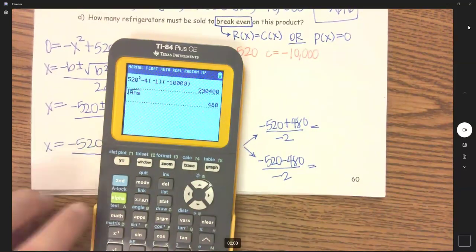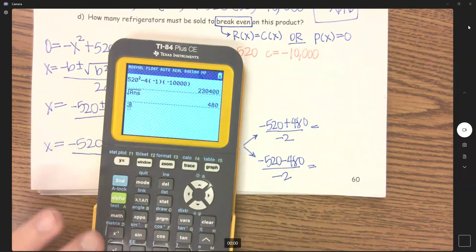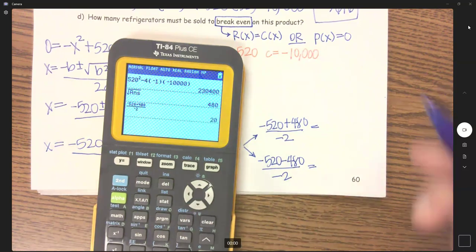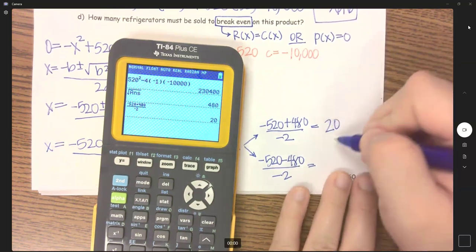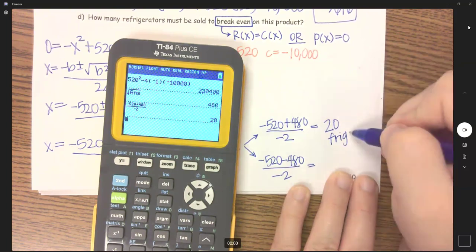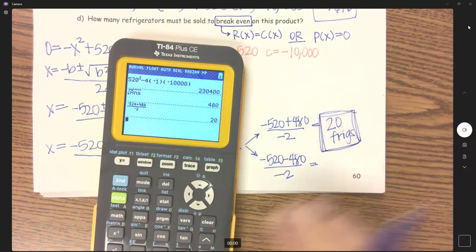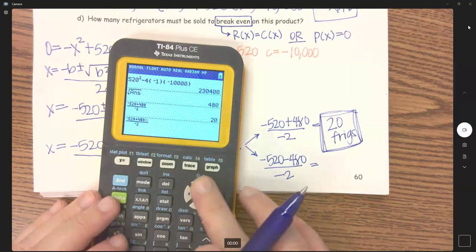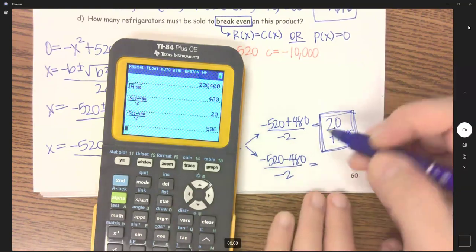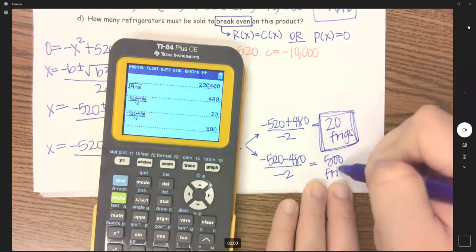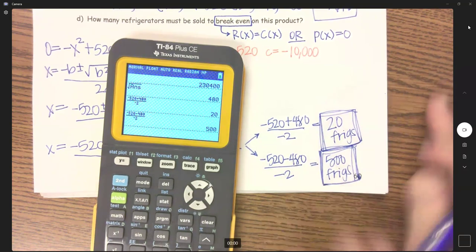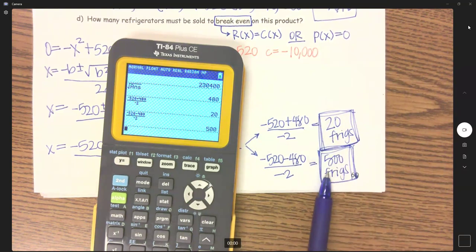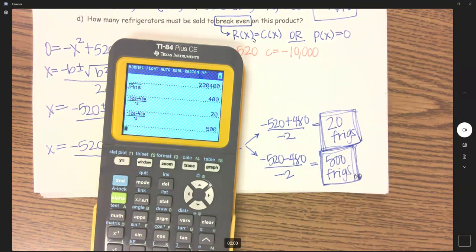I'm just going to use my n over d here, so we've got negative 520 plus 480 over negative 2, so we have 20, and we are talking about X is the number of refrigerators, so 20 refrigerators. And then let's change that to a minus, or 500 refrigerators will get us to break even. Anything in between, we are making money. Less than 20 we're losing, and even more than 500 we're also losing.